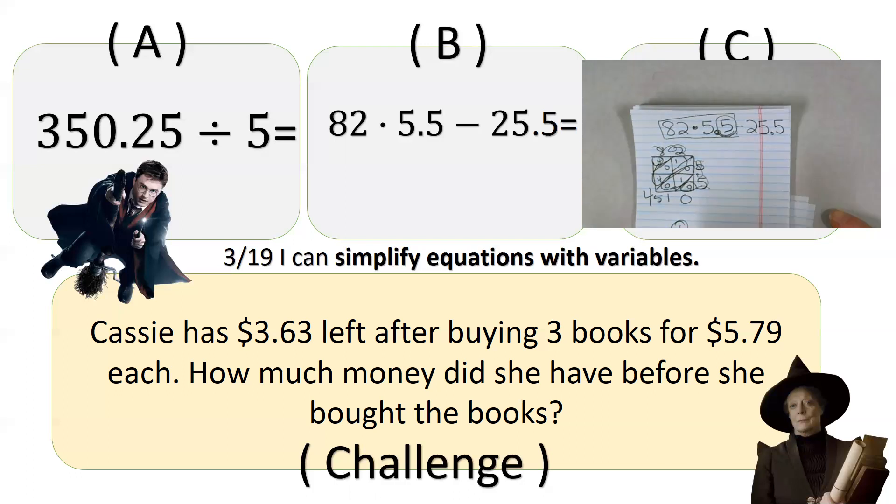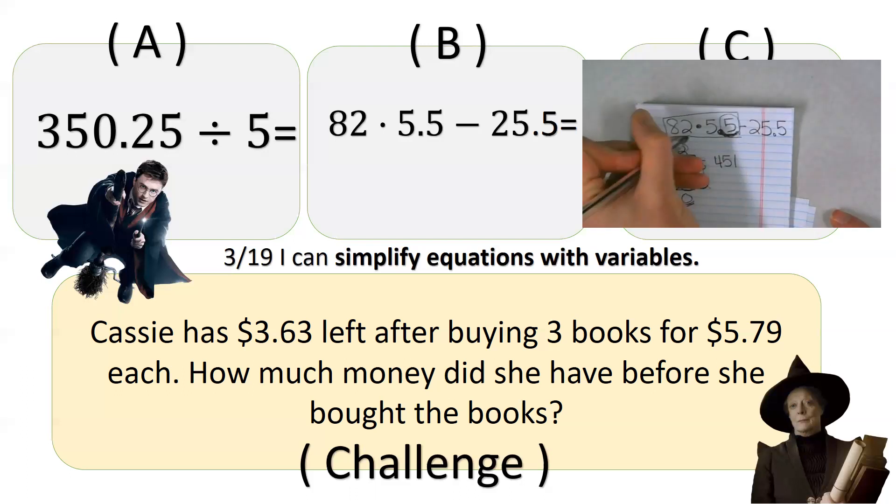You ignore the outside number. 0 falls down. 0 plus 1 plus 0 is 1. 4 plus 0 plus 1 is 5. And 4 falls down. Now, I have my answer. My answer is right here: 4, 5, 1, 0. There was one decimal number. So therefore, my answer also has to have one decimal number. So therefore, my answer is 451. So I have a new problem. I have 451, which represents this box that I simplified, minus 25.5.